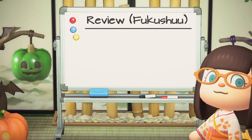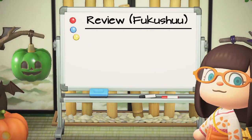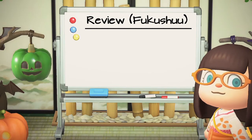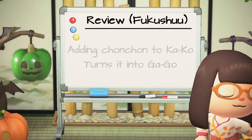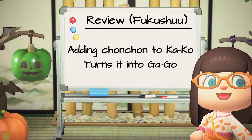So as a review, adding the dakuten or chonchon to hiragana ka, ki, ku, ke, ko turns it into ga, gi, gu, ge, go.